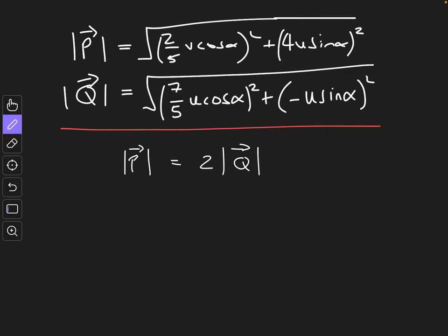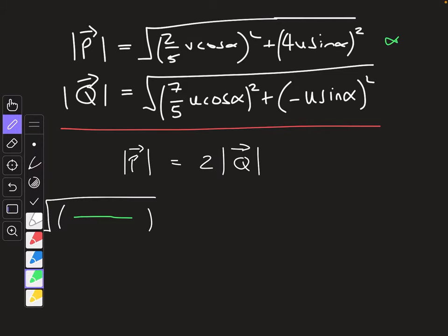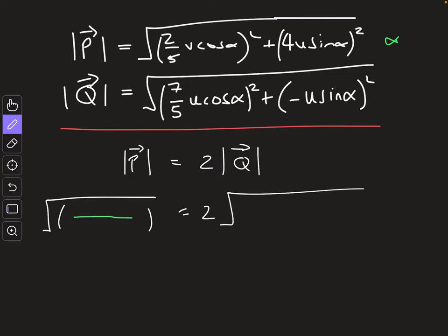So just using what we had previously, we're going to say the square root of all this stuff. I'm just going to put, for the moment, I'm just going to put this for a moment. I'm not going to write out this long one. I'll just say the square root of all that stuff in P, which is this stuff here, is going to equal 2 times the square root of all this stuff in Q, which I'll just say is this stuff here.